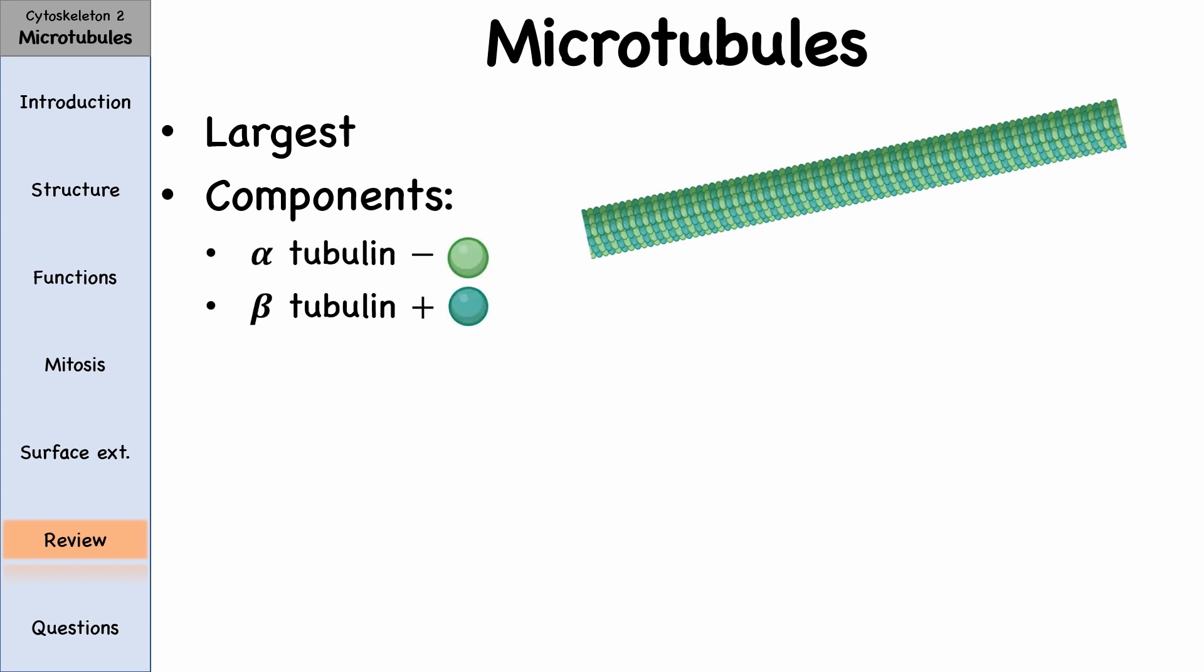One of its functions is to transport vesicles to and from anywhere in the cell, with the help of the proteins kinesin and dynein. It also plays a role in cell division by forming the centriole.